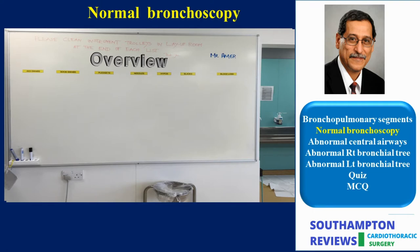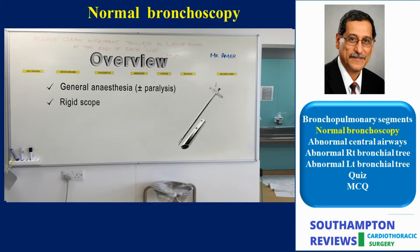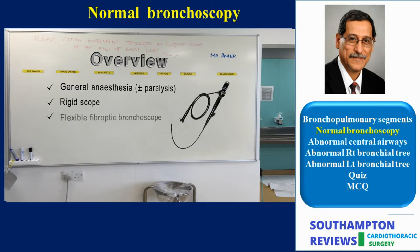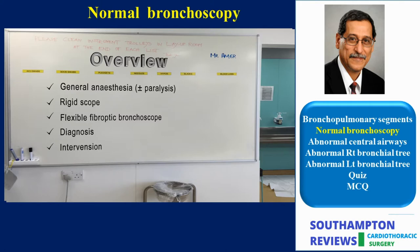Bronchoscopy at our unit is performed under general anesthesia just before the operation, usually in the anesthetic room next to the operating room. We introduce the rigid bronchoscope first and then the flexible fiber optic scope through the rigid scope. This arrangement allows precise diagnosis due to the excellent vision, with the ability to convert the diagnostic procedure into a therapeutic one should the need arise.